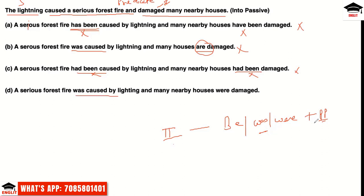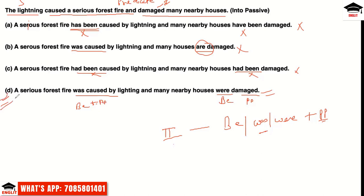Option D is confirmed: 'A serious forest fire was caused and many nearby houses were damaged by the lightning.' Both parts follow the correct passive structure of 'be + past participle' in past tense. This is our answer — option D.